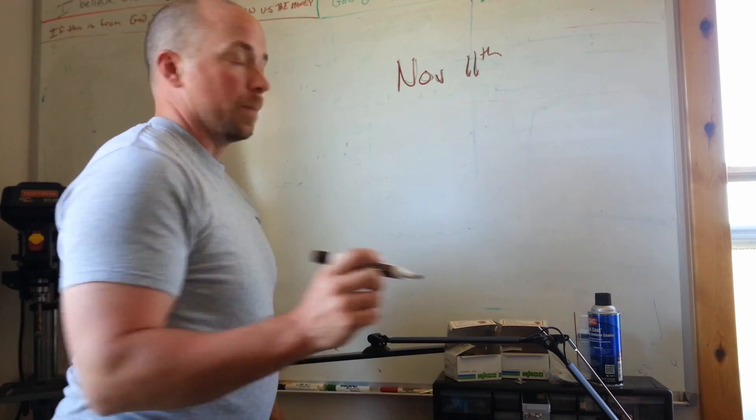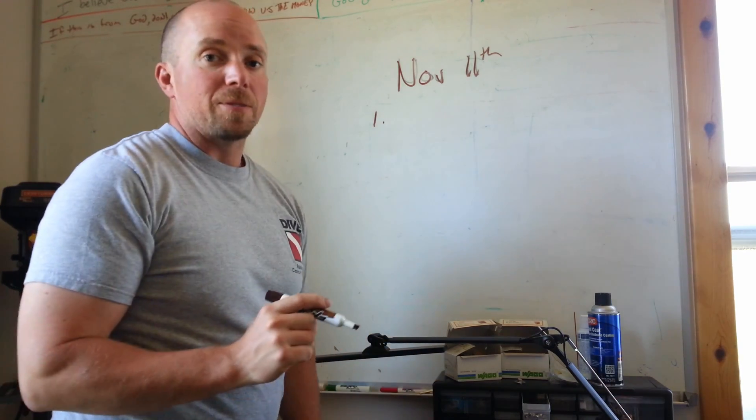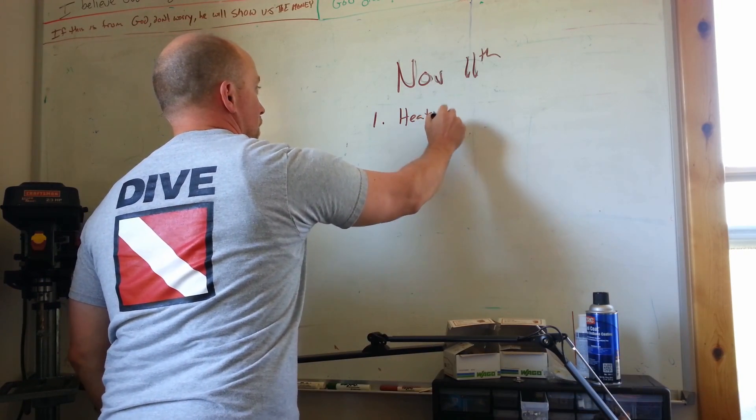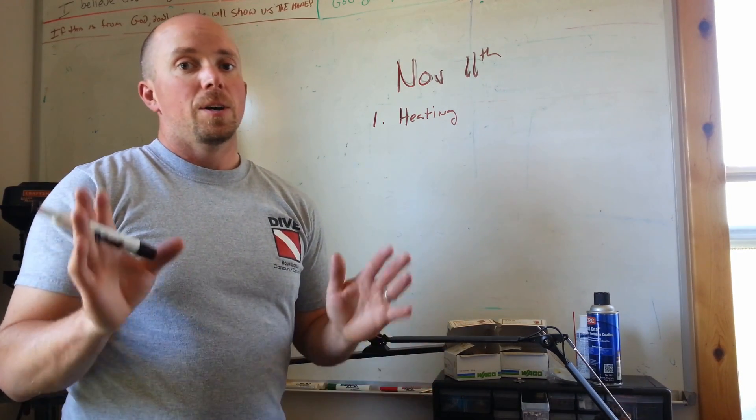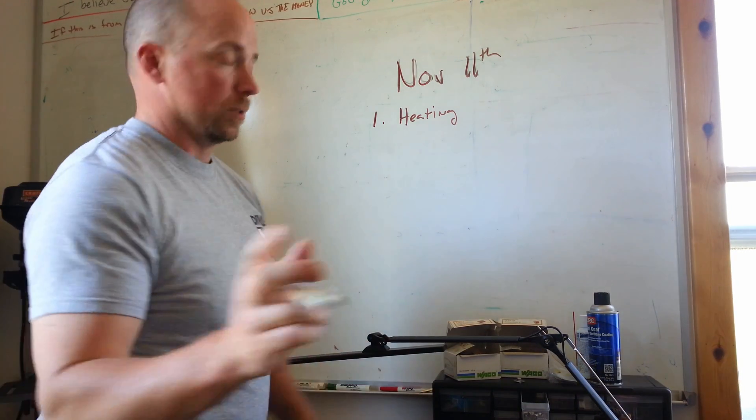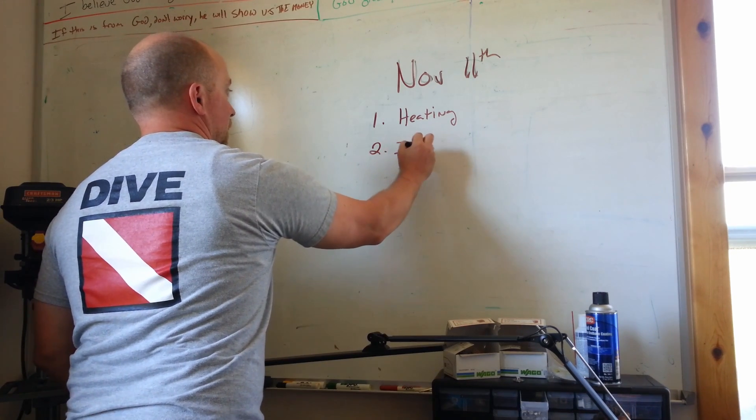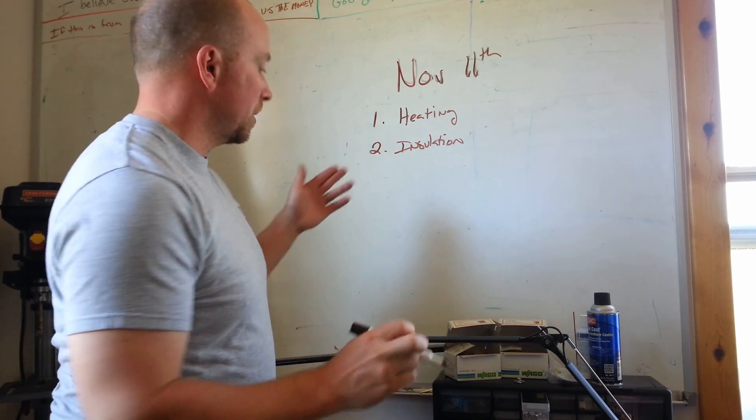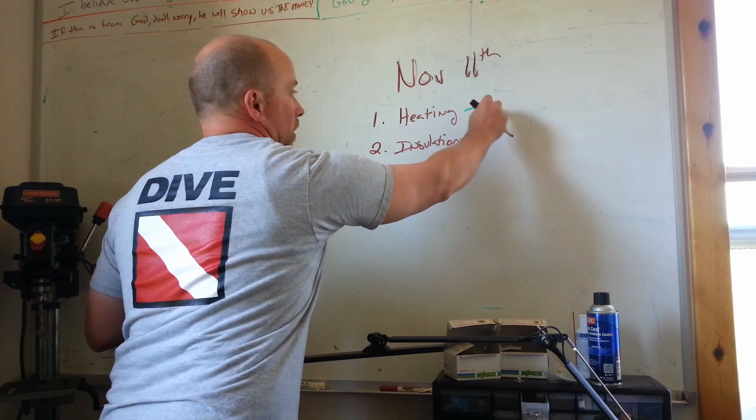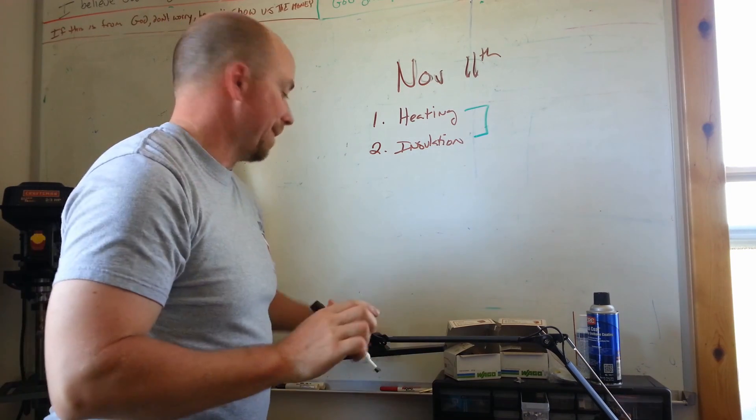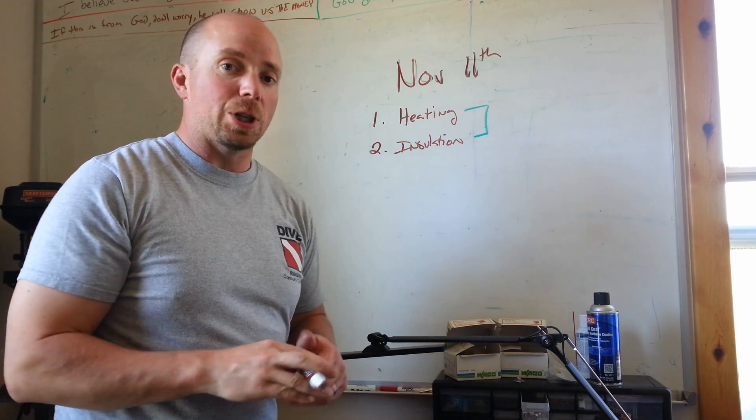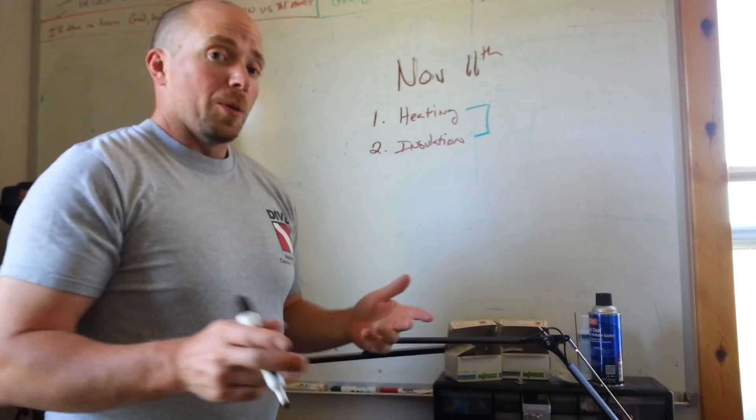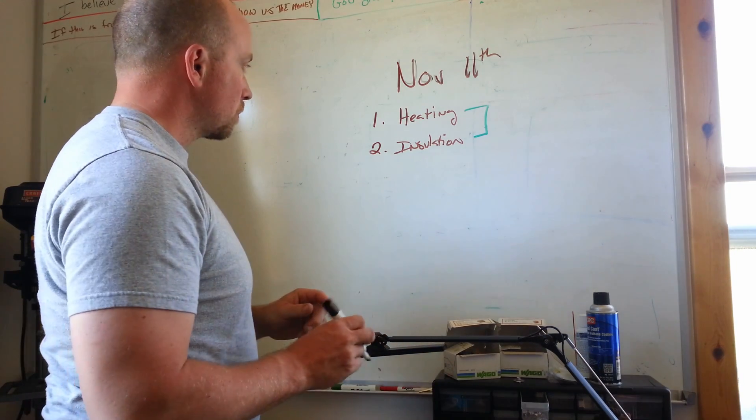So there's some key things that, again, those have been following along, you know what they are. But let's go ahead and list them out. Number one, we have to figure out the heating solution. Now some of you are already going to be thinking, no Jeff, you need to figure out the insulation solution. That's number two. So both of these things are essentially tied together. We can't solve one without solving the other one at the same time, so we got to kind of do a chicken and an egg situation.